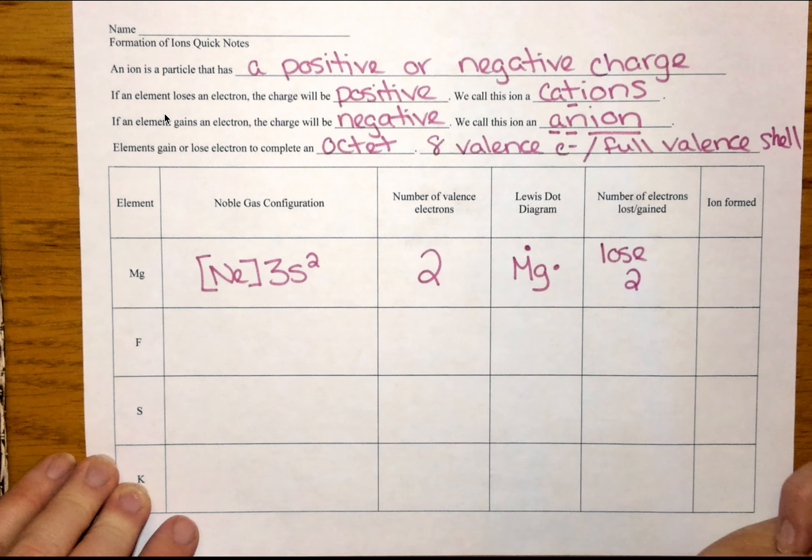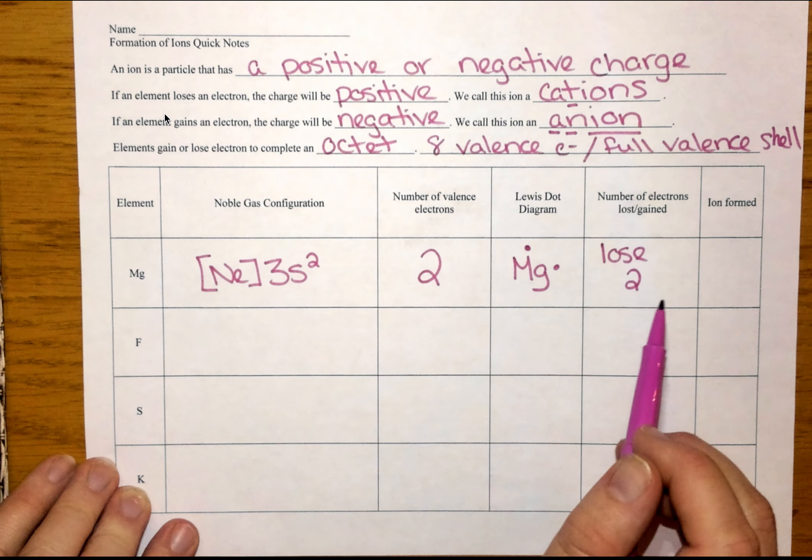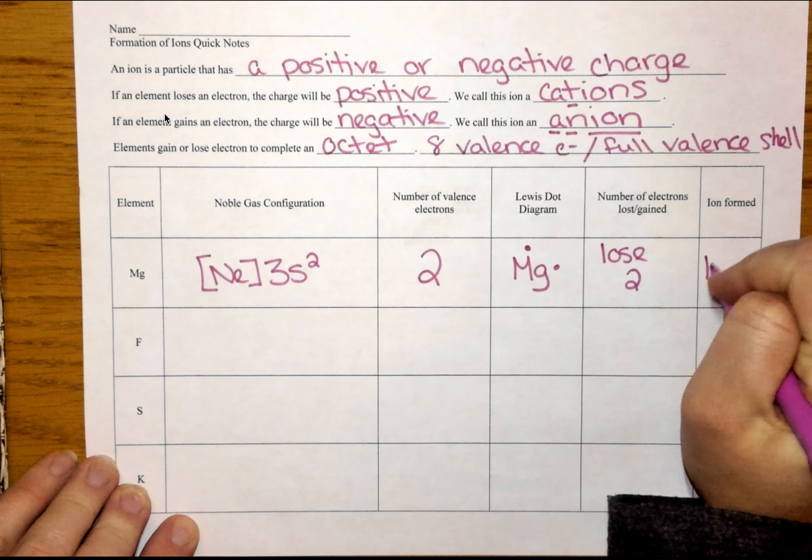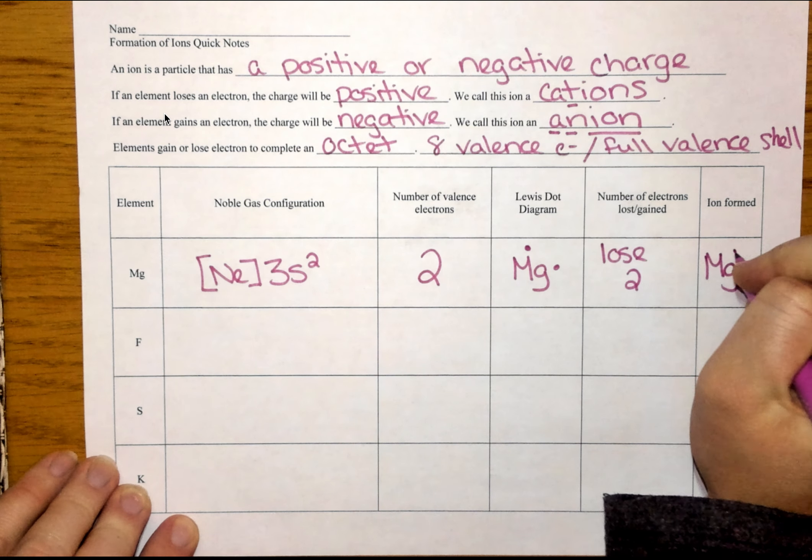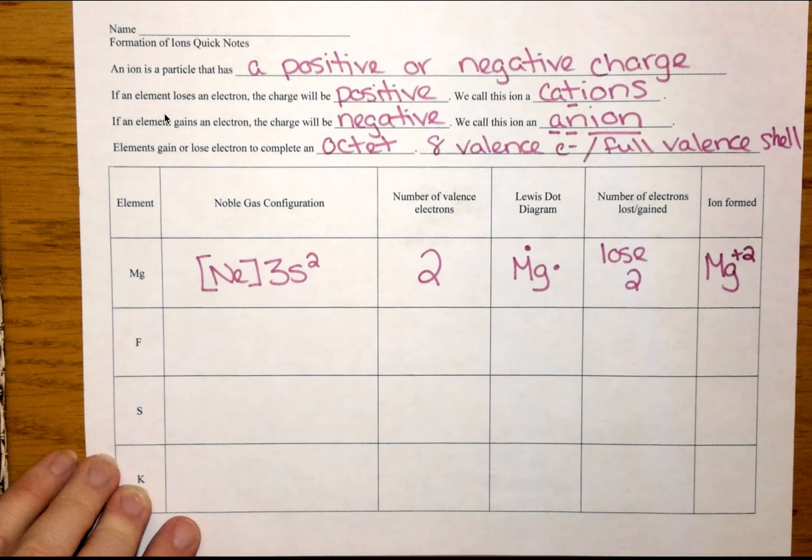Just a note, people do this all the time. Lose has one O. We don't loose two electrons. We lose two electrons. Now, if I'm going to lose two electrons, I'm losing two negative particles. That means my charge in the magnesium ion is going to be Mg2+.